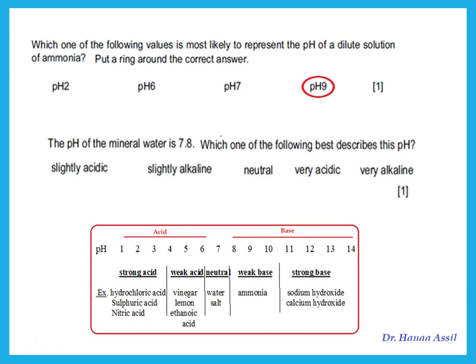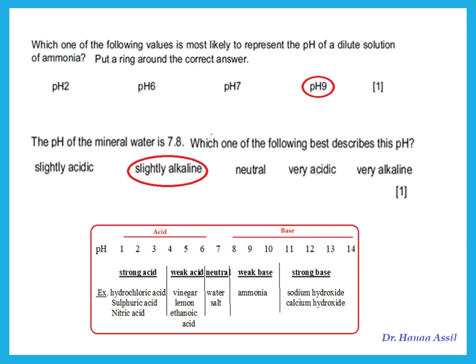The pH of mineral water is 7.8. Which of the following best describes this pH? Since 7 is neutral and anything above 7 is a base, 7.8 is above 7 — it is weakly basic, or slightly alkaline. Remember that the word alkali means a base that dissolves in water, so alkaline is the same as basic but specifically dissolves in water. Therefore, 7.8 would be slightly alkaline.